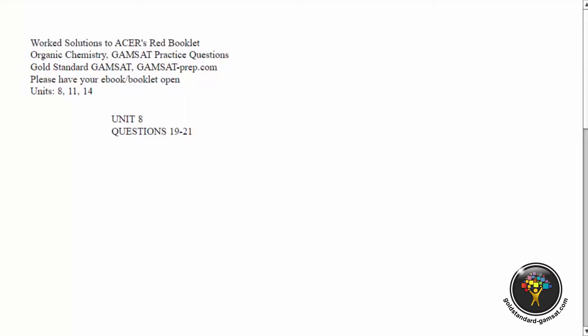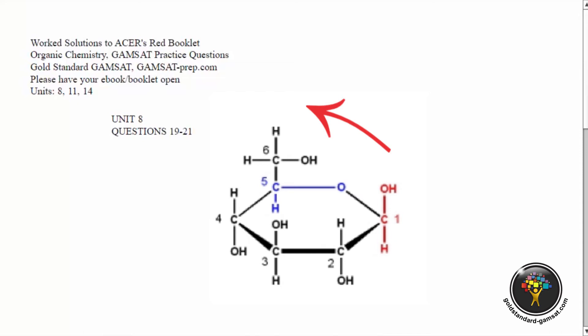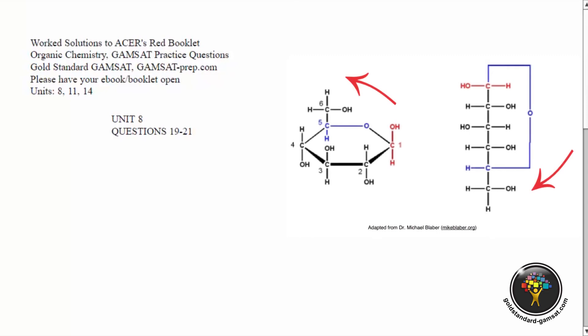In the Haworth projection, the relationship between oxygen and the CH2OH group is counterclockwise — it's moving off to the left. In the Fischer projection, the relationship between oxygen and the CH2OH group is clockwise — it's moving off to the right.